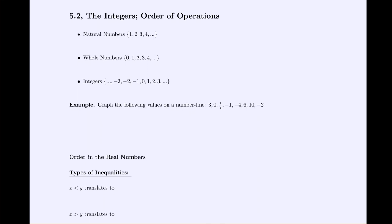In section 5.2 we're going to look at integers and orders of operations. In our previous video we talked a bit about natural numbers — the positive integers starting at 1 and continuing on. The idea of whole numbers adds one additional value: whole numbers are natural numbers plus zero.